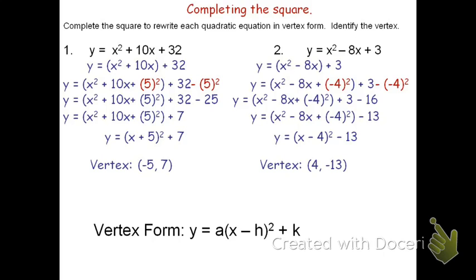To review: once we've grouped the x squared and the x terms together, we cut the x coefficient in half to figure out what that last piece will be, and it's that quantity squared. Whatever we add on one side, we must subtract on the other. We then combine the constants and factor out the quantity.